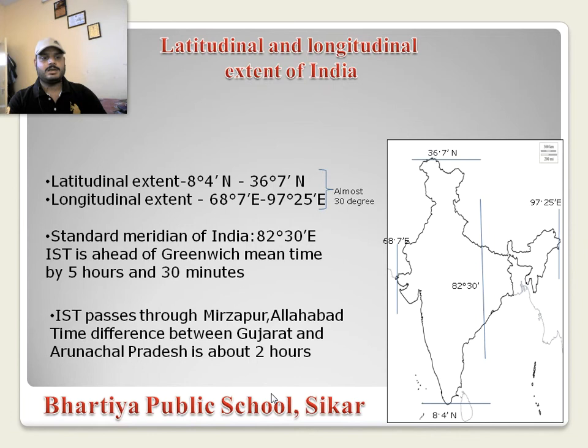The Indian standard meridian passes through Mirzapur, Allahabad. The time difference between Gujarat and Arunachal Pradesh is about two hours.